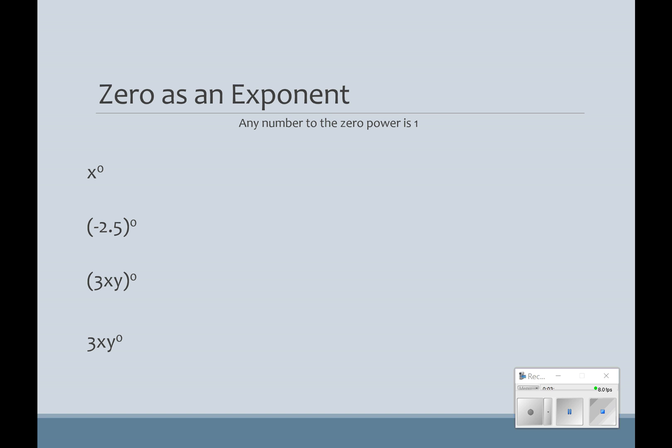So what do we have? Now, when zero is an exponent, any number to that zero power is one. So x to the zero is one. Negative two-fifths to the zero power is one. Three x y to the zero power is one. This last one, though, is different. Notice that only the y is taken to the zero power. So this one is going to be three x times one, or three x. So you want to watch out for that. You want to make sure in these, with the parentheses, everything is taken to that zero power. Here, since it's only to the y, only the y is taken to the zero power.